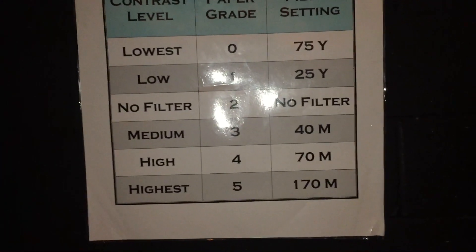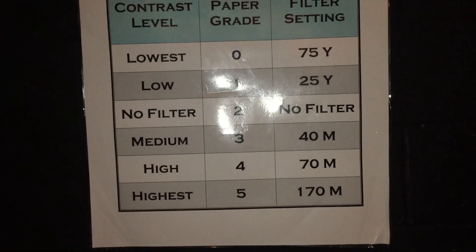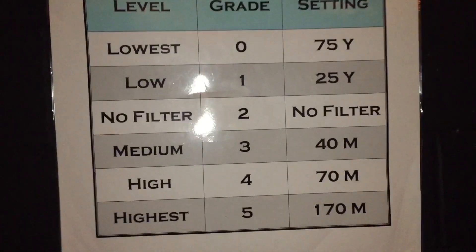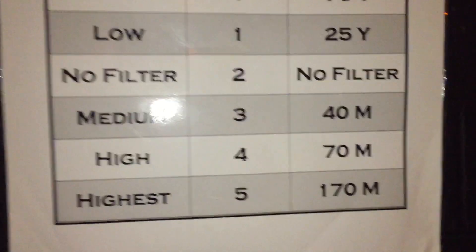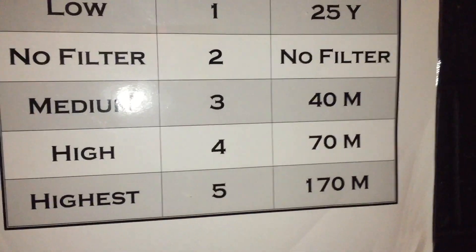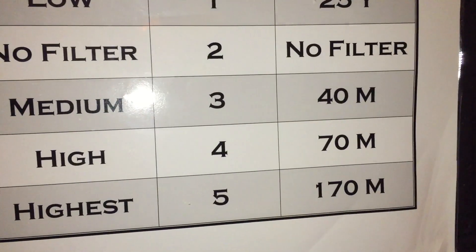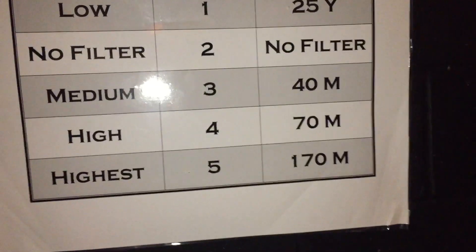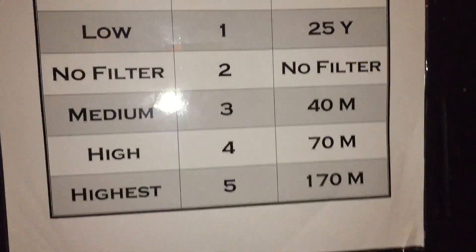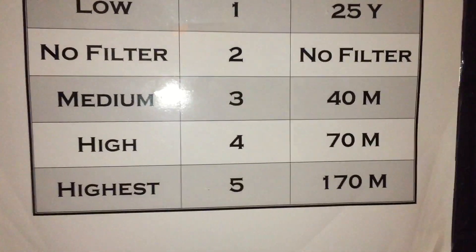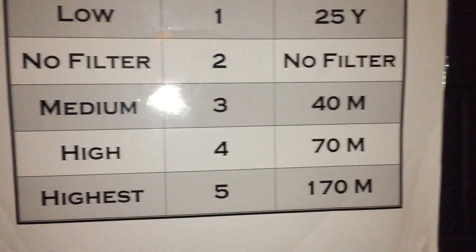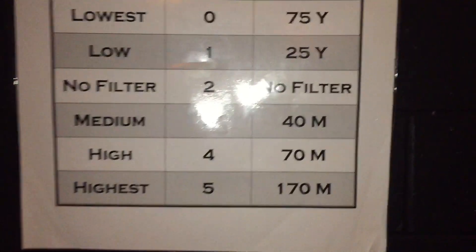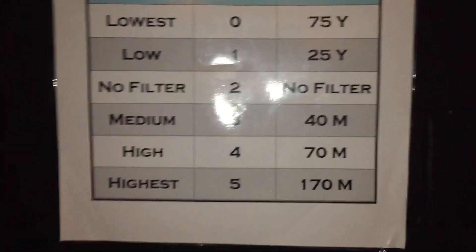On the Bessler enlargers you can go in between some of those settings as well — maybe you want something between 40 and 70, so you set it to 50 or 60. The dial actually goes up to 200, so you could set the magenta as high as 200.